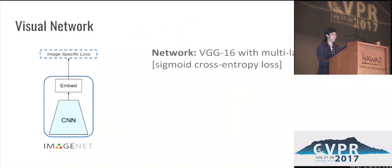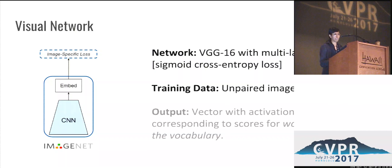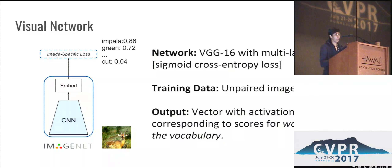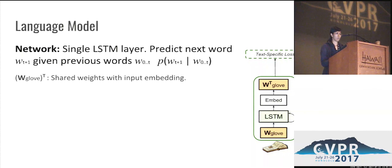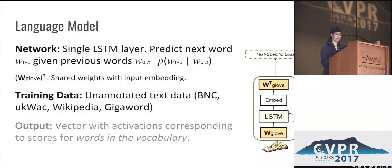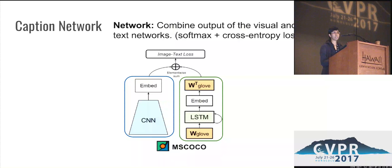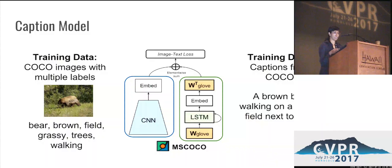Going into some details: our visual recognition network uses the VGG16 network with a multi-label loss, trained on unpaired image data to predict multiple labels — specifically, confidences over the entire vocabulary of words. For the language model, we use a single LSTM layer trained to predict the next word given the previous words, and we use GloVe embeddings as the semantic embeddings both in the input and output. This is trained on unannotated text data from Wikipedia, GigaWord, and other text corpora. Our caption network combines the output of the visual recognition network and the language model using an element-wise sum, and is trained on the COCO image caption data. We also extract multiple labels from these captions for the images to train our visual recognition network, and the entire caption network is trained to predict the caption corresponding to the given image.